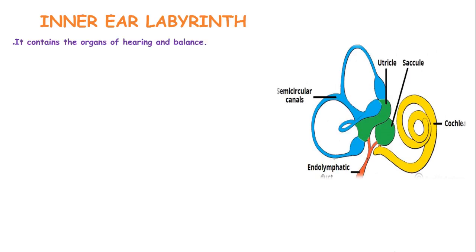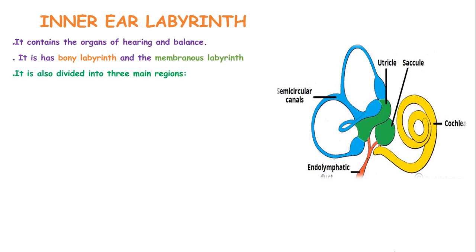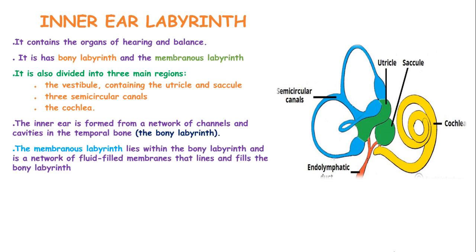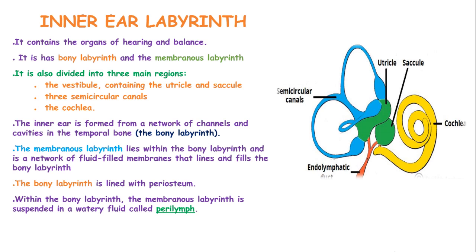The inner ear, or labyrinth, contains organs of hearing and balance. It has the bony labyrinth and the membranous labyrinth, and is divided into three main regions: the vestibule, which contains the utricle and the saccule; three semicircular canals; and the cochlea. The inner ear is formed from a network of channels and cavities in the temporal bone, known as the bony labyrinth. The membranous labyrinth lies within the bony labyrinth and is a network of fluid-filled membranes. The bony labyrinth is lined with periosteum, and the membranous labyrinth is suspended in a watery fluid known as perilymph, while the membranous labyrinth itself is filled with endolymph.